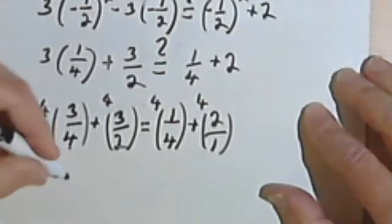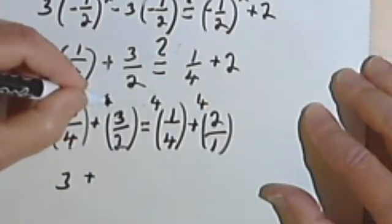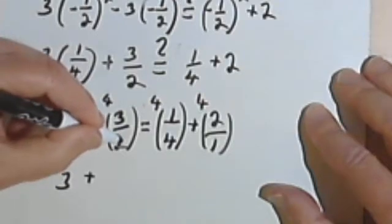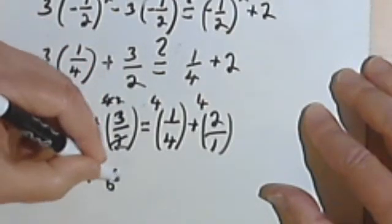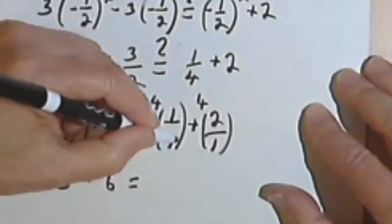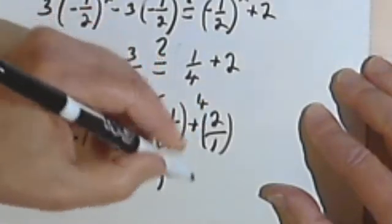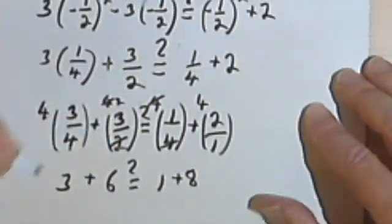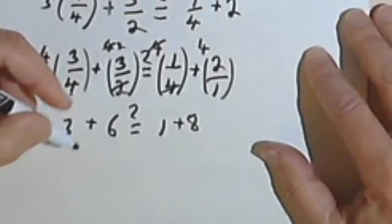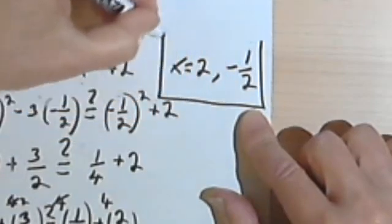These fours will cancel and I'll get a 3. I can factor out a 2 and get 2 times 3 is 6. These fours cancel and I get a 1, and 4 times 2 is 8. So 3 plus 6 is 9, and 1 plus 8 is 9. So both of my answers check.